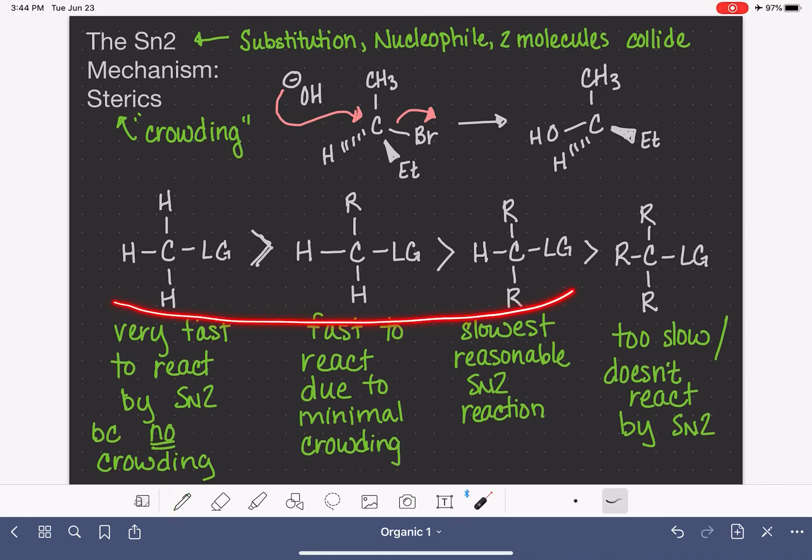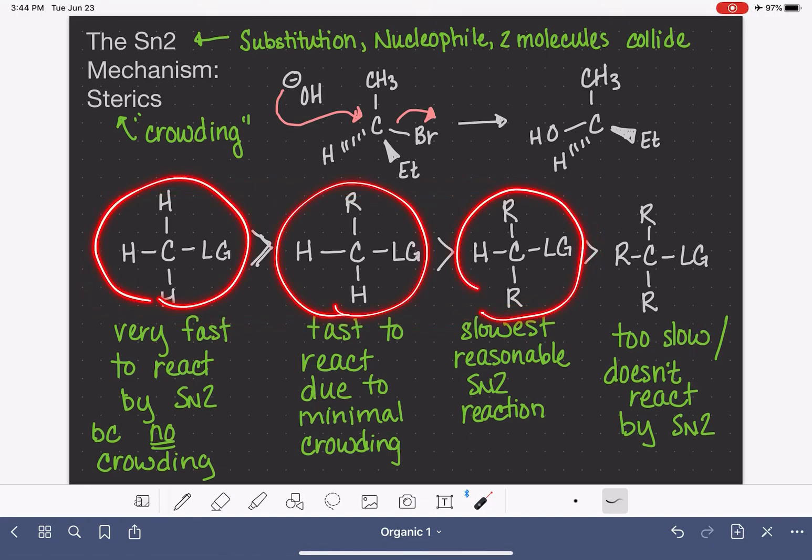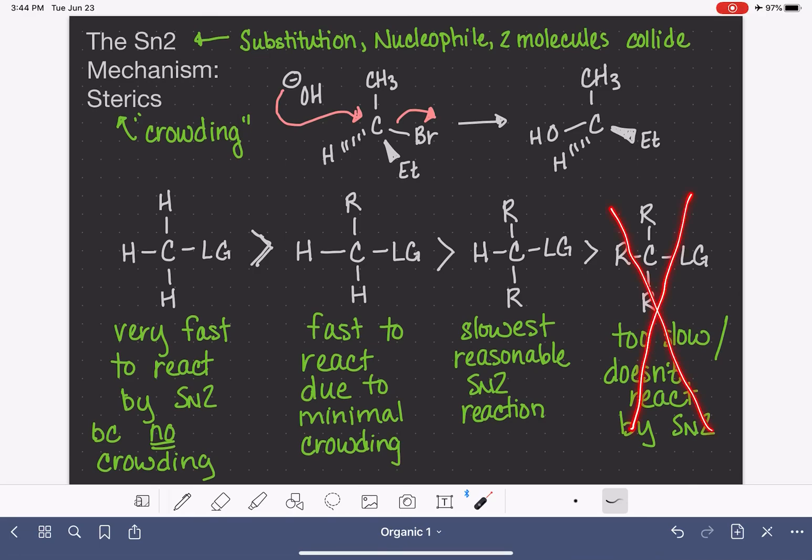So to summarize, all of these types of substrates or electrophiles are capable of doing SN2 in a reasonable way, and they have a relative rate of reaction, decreasing as you add more substituents to them. If you have no hydrogens at all on that central carbon, we're going to say that that reaction just does not even proceed, because it moves so slowly.